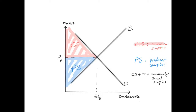Consumer surplus is basically the additional satisfaction that consumers get from consuming a product when they end up paying less for it than they were originally willing and able to pay. All consumers in the market pay the equilibrium price, but some consumers may have been willing and able to pay more — that additional satisfaction is called consumer surplus.